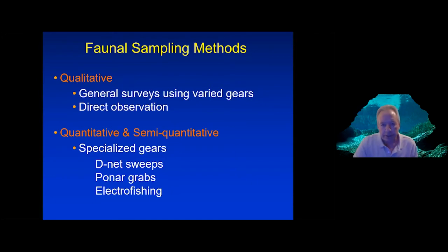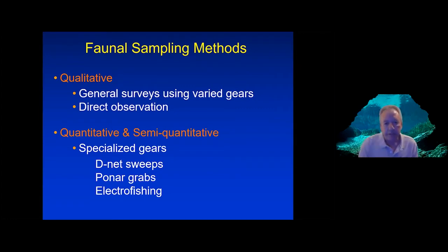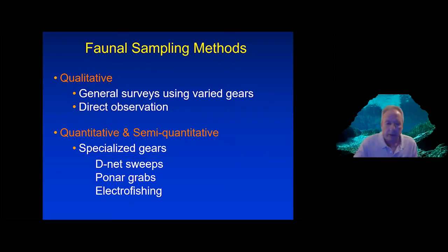I want to discuss some of the methodology that ecologists use to sample animals in these habitats. We have two general categories: qualitative and quantitative or semi-quantitative means. Qualitative methods include direct visual observation or certain gear types that are not particularly quantitative. Then we have gear types that are fairly quantitative and allow us to more carefully evaluate changes to communities.